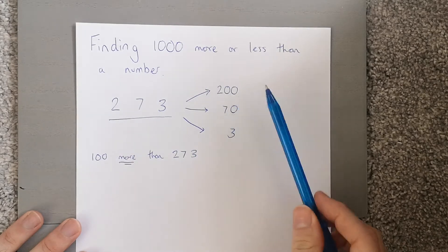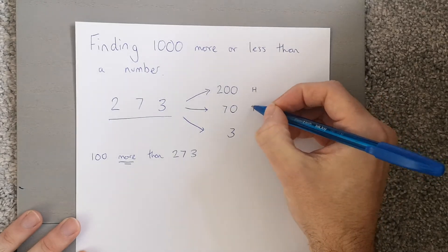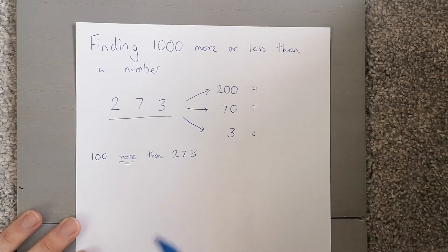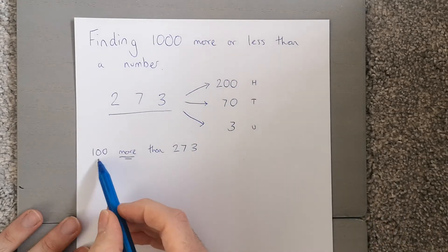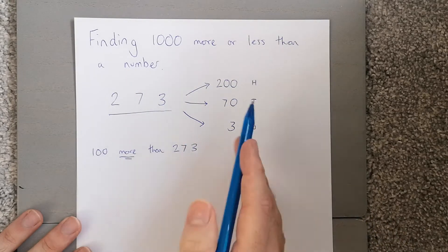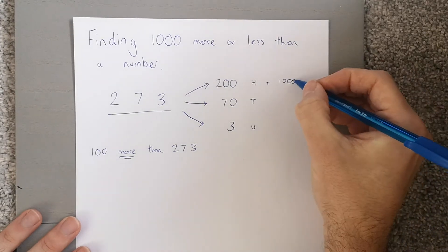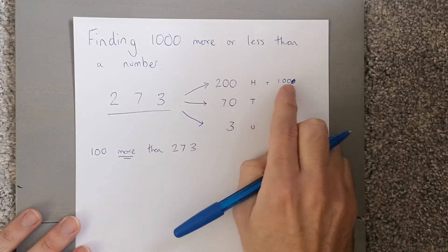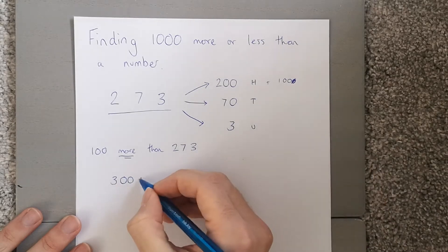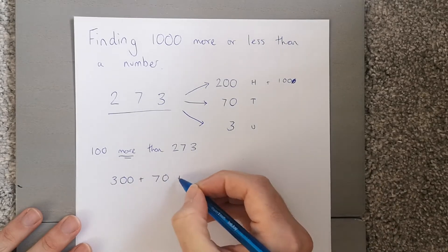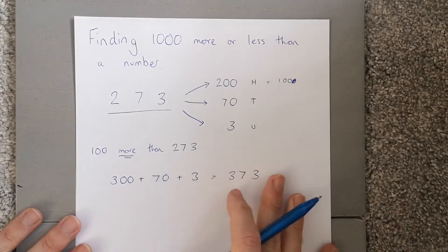Which column is changing — is it my hundreds, my tens, or my units? We should realise we're changing our hundreds, and we're only changing it by 100 more, so we're just adding one more hundred. So 200 plus 100 gives me 300. My 70 stays the same and so does my 3, giving me 373.